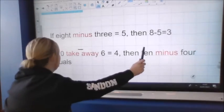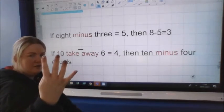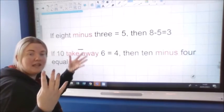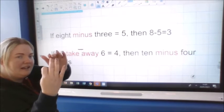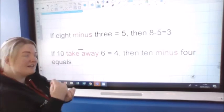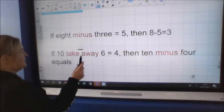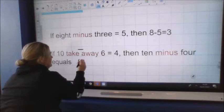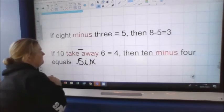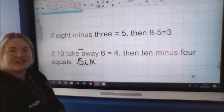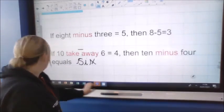Then ten minus four, so we get ten in our head, four fingers. Minus, we said, meant take away. It meant subtract. So ten minus four. So ten, nine, eight, seven, six. So we know if ten take away six is four, then ten minus four equals, now because we've got the number there, I want to have a go at writing the word six. Excellent. If ten take away six equals four, then ten minus four equals six.